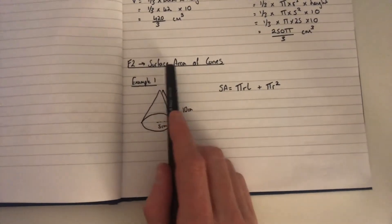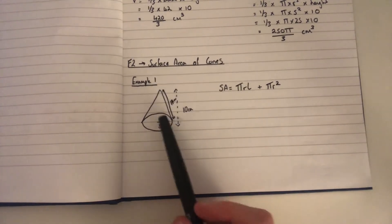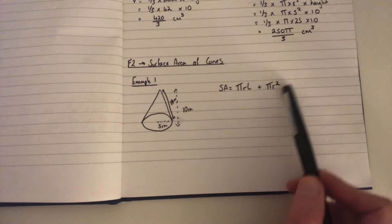F2 is finding the surface area of a cone, which is the area of all the faces. A cone is made up of two faces: we've got the circle at the bottom, which is πr²,